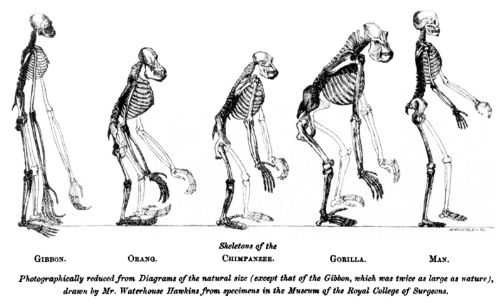Ecological genetics tie into evolutionary ecology through the study of how traits evolve in natural populations. Ecologists are concerned with how the environment and time frame leads to genes becoming dominant. Organisms must continually adapt in order to survive in natural habitats. Genes define which organisms survive and which will die out.